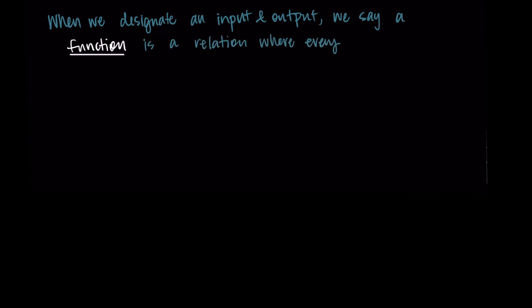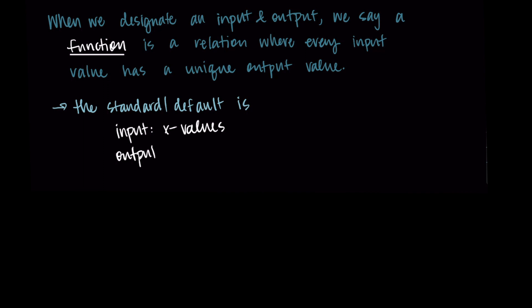Now that we have relations, we can define functions. When we designate a specific input and output, a function is a special relation where every input value has a unique output value. Typically, we let the input be the x values and the output be the y values. If it's not specified which is the input and output, you can assume the input is x and the output is y.